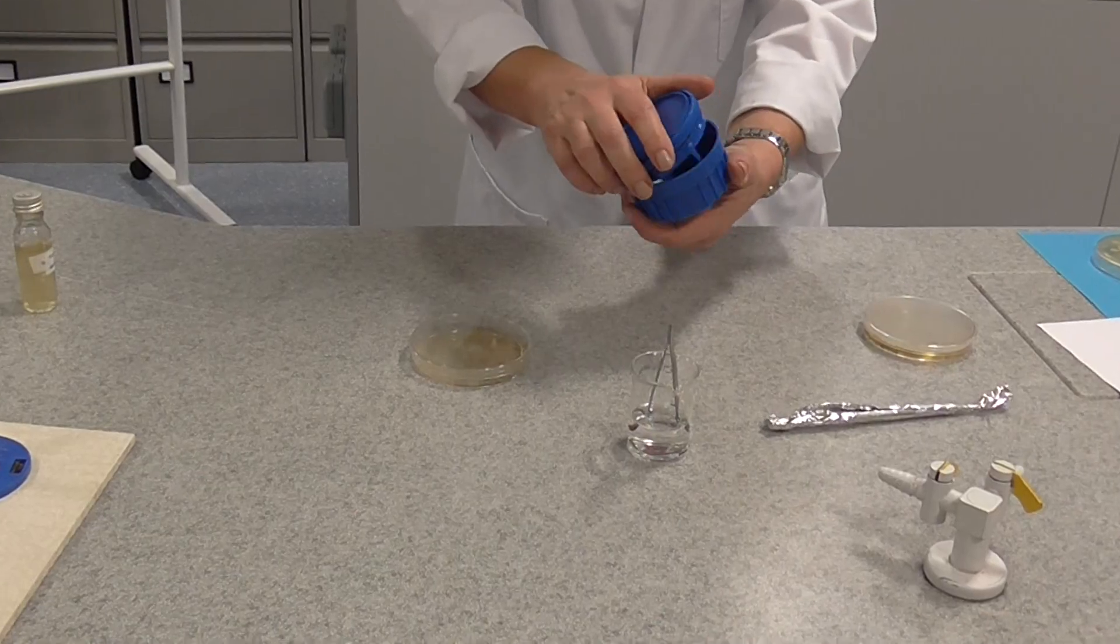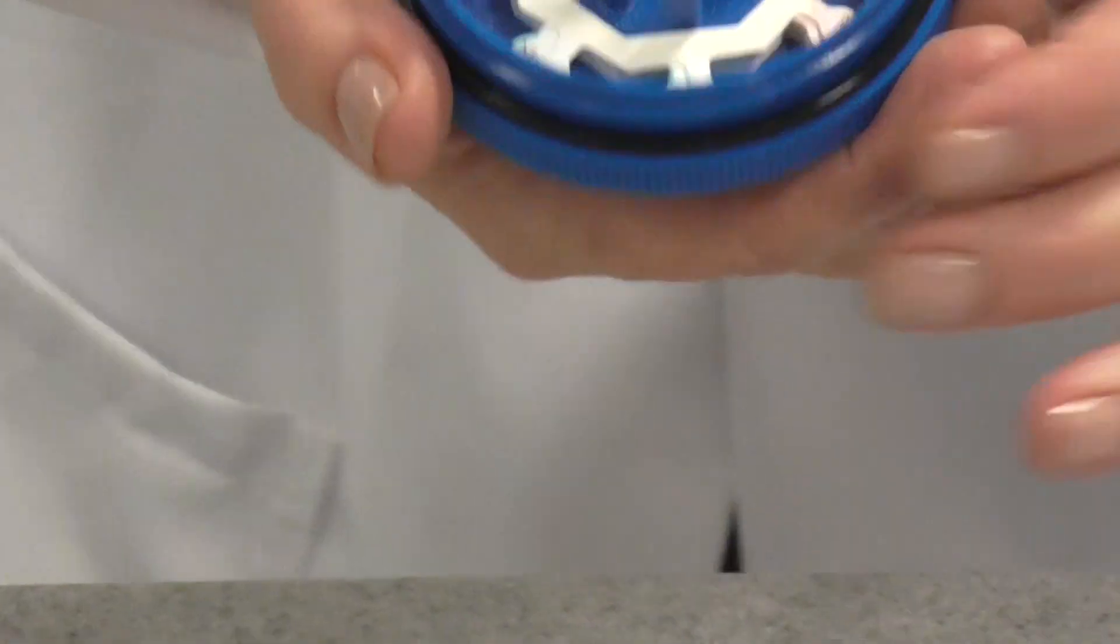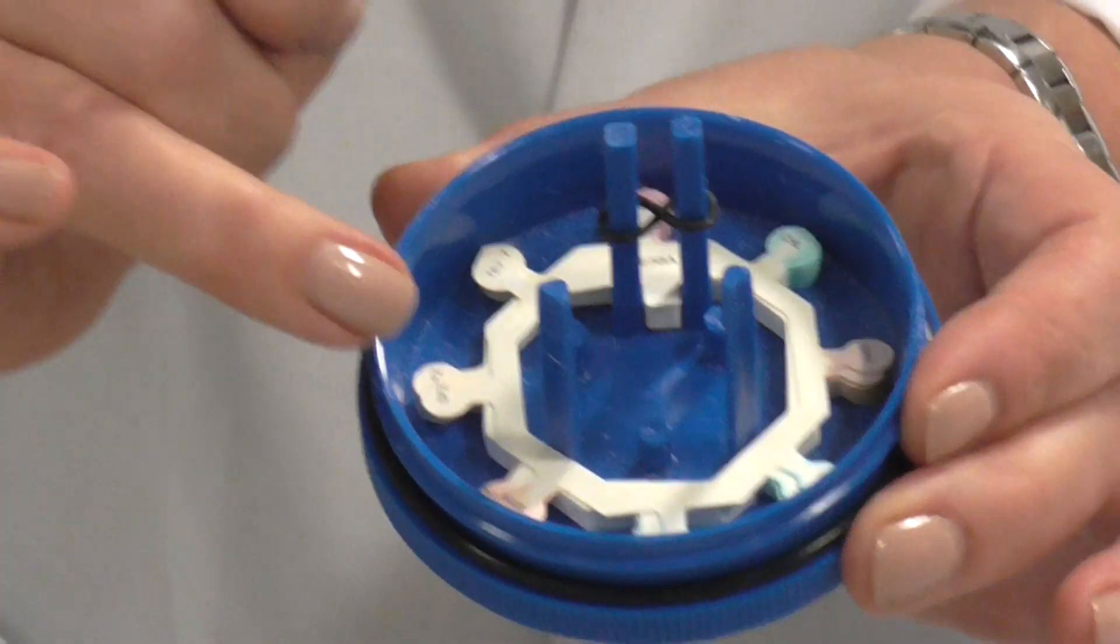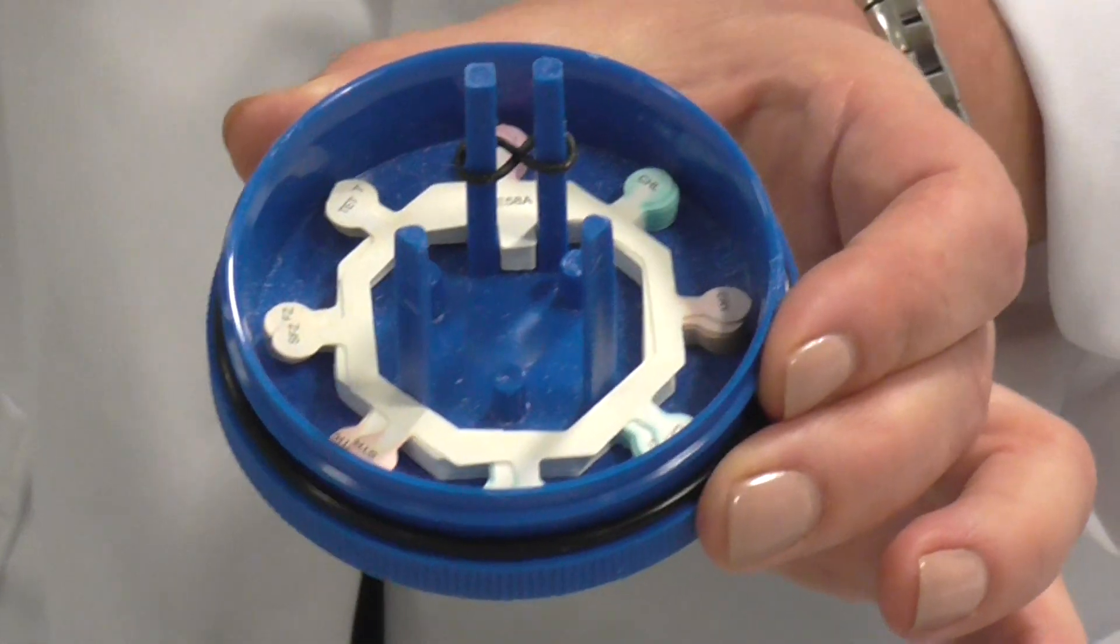And if you have a look here, this is what they look like. They arrive, and you can see it's actually a piece of kind of filter paper with little circles on, little discs. And each disc is impregnated with a different antibiotic.